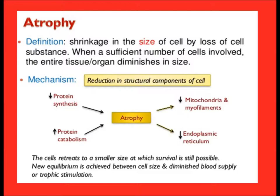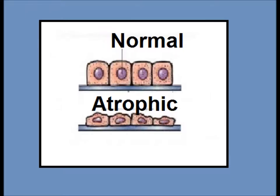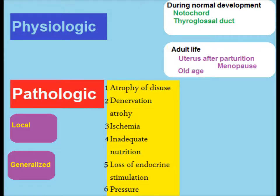Here is the normal tissue epithelia and atrophic epithelia. Atrophy can be physiological, as during normal development in embryonic life or in adult life, or it can be pathologic, which may be local or generalized. There are different causes of atrophy.